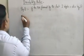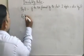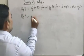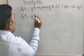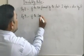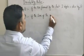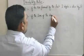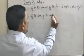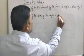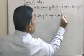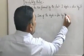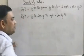When is a number divisible by 9? A number is divisible by 9 if the sum of the digits is divisible by 9.